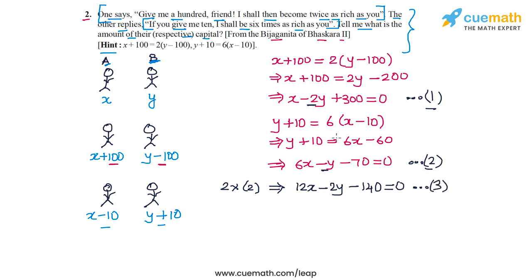Now I can subtract equation one and equation three. So three minus one, that will eliminate the Y terms. On the LHS, I will have 12X minus X, and I will have minus 140 minus 300 equal to zero. This means that 11X is equal to 440, or X is equal to 440 by 11, which is 40.